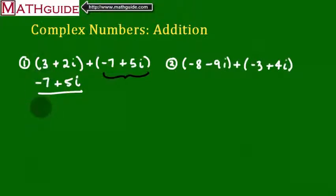So negative 7 plus 3 is negative 4. 5 plus 2 is 7. And there you have it. That's the answer. All done. Our answer is in A plus Bi form. We have our real part. We have our imaginary part. We're done.